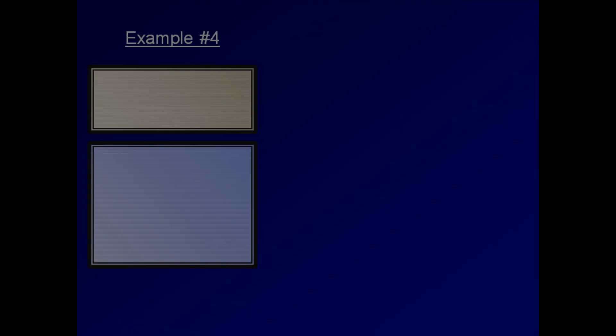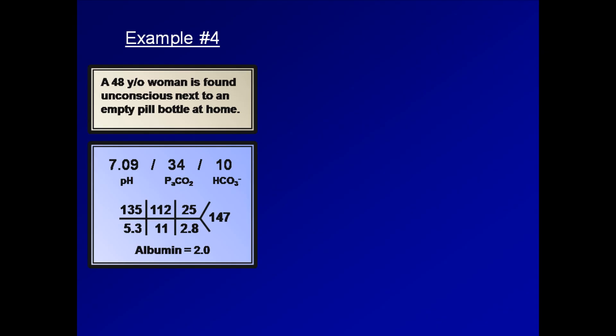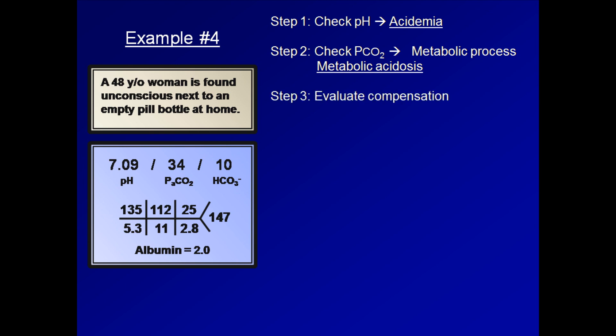Here is our last example. A 48-year-old woman is found unconscious next to an empty pill bottle at home. Her pH is 7.09, pCO2 34, bicarb 10. Step one, we have an acidemia. Step two, the low pCO2 tells us that she has a metabolic acidosis. Step three, for compensation, we once again use Winters formula and ask if the pCO2 of 34 is approximately equal to 1.5 times the bicarb of 10 plus 8. It does not. Therefore, compensation is not appropriate. As the pCO2 is higher than expected and trending more towards an acidemia, the additional acid-base disorder is a respiratory acidosis.